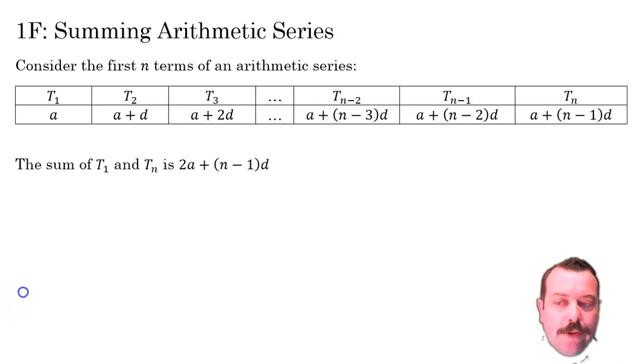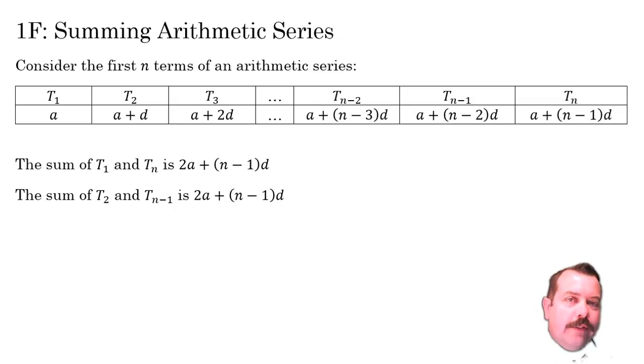Now if I look at the first and the last and I add them together I've got an a and an a plus n minus 1 d. Adding those together I get 2a plus n minus 1 d. If I add the second and the second last terms together I get a plus d plus a plus n minus 2d which gives me 2a plus n minus 1 d, the same as when I added the first and the last terms together.